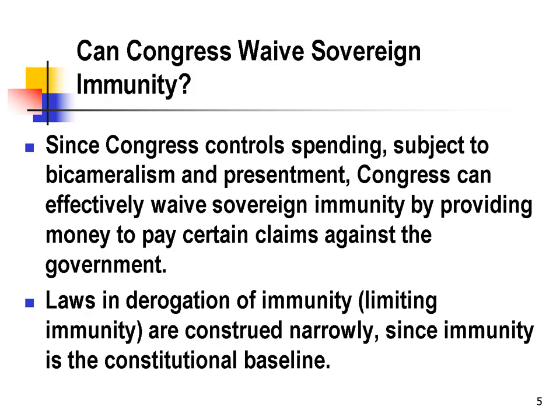Congress recognized that the private bill process was a mess. It was inefficient, it was subject to graft, and even when it worked, it took a long time to compensate people. Congress determined that it could waive sovereign immunity. The process would be to appropriate a pool of money that could be used to pay judgments, and then to set up an adjudication process to determine which claims are valid and how much they should be paid.